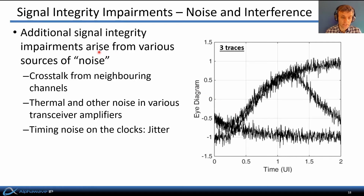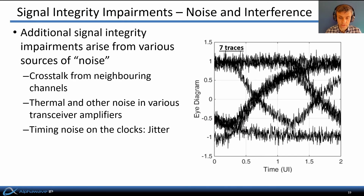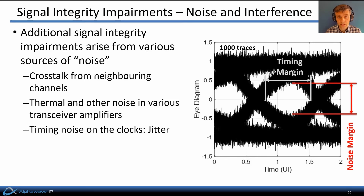Additional signal integrity impairments arise from various sources of noise in the link, including crosstalk from neighboring channels, thermal and other sources of noise in the transceiver amplifiers at either end, and noise on the clocks used to generate and sample the waveforms — also called jitter. We can see the impacts of all these noise and jitter sources by superimposing many subsequent traces of different data patterns. Starting with just a few traces and adding more, they combine to form a characteristic eye pattern; repeating this with thousands of traces gives a feel for the resulting noise and timing margin by looking at the opening inside the eye-shaped pattern.